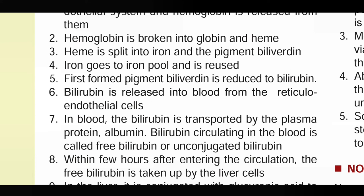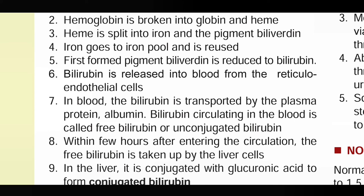Heme is split into iron and the pigment biliverdin. Iron goes into the iron pool and is reused. The first formed pigment, biliverdin, is reduced to bilirubin.